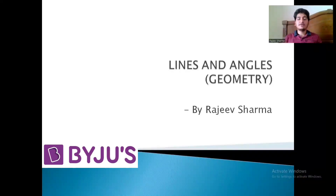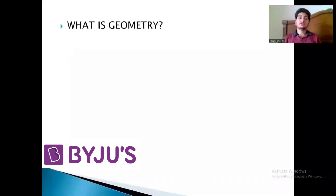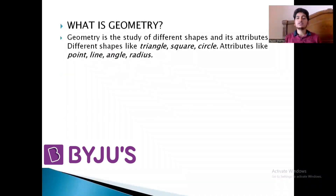Hello everyone, my name is Rajiv Sharma and today we are going to discuss lines and angles. Before we begin, we must understand the meaning of the word geometry. Geometry is the branch of mathematics in which we study about different shapes and their attributes. An attribute is something which is associated with different shapes, like angles of a triangle, radius of a circle, or sides of a square.